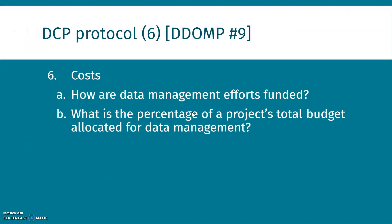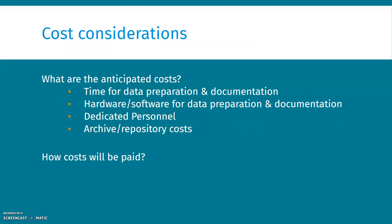For the DCP protocol number six, the DDOMP number nine: costs are a consideration as well. For the Belmont Forum, how are data management efforts funded, and what is the percentage of a project's total budget allocated for data management? What are the anticipated costs? Time for data preparation and documentation, hardware and software for data preparation and documentation, dedicated personnel costs, and there can also be costs for archives and repository depending on your institution or country. How will those costs be paid, both during the project and in perpetuity?